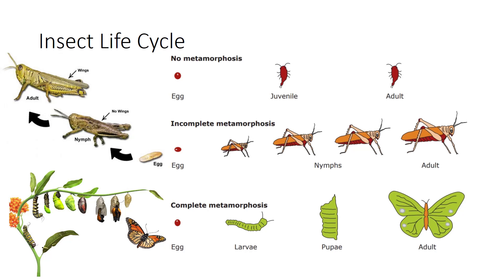In incomplete metamorphosis, the immature is a nymph that looks similar to the adult. In complete metamorphosis, the immature is a larvae, then a pupae, before becoming an adult. The immature stages look different than the adult and also feed on different plants or plant parts.